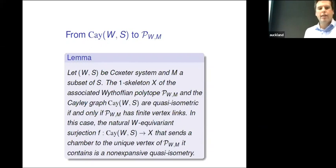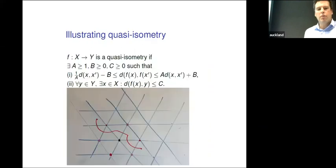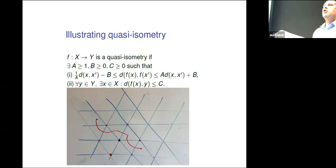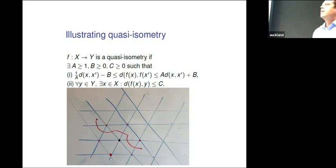It's a non-expansive quasi-isometry. A quasi-isometry between two metric spaces X and Y means you have constants A ≥ 1, B and C ≥ 0, such that you deform the distance — you're allowed to deform it but not by much, you have to stay within these boundaries — and you're almost surjective: you may not be surjective, but there's always something in the image which is not too far away. That's the notion Gromov introduced to study geometry at large scale.